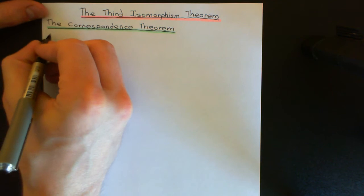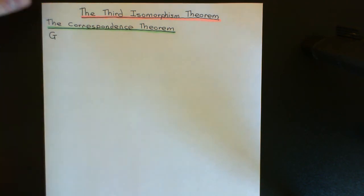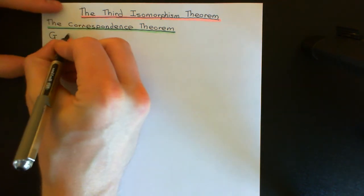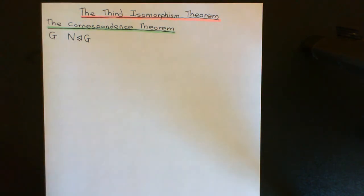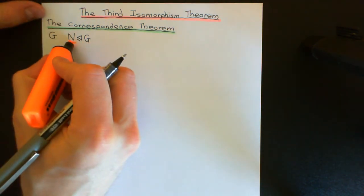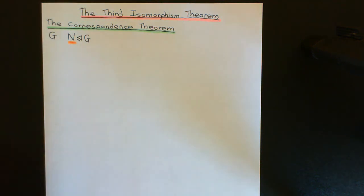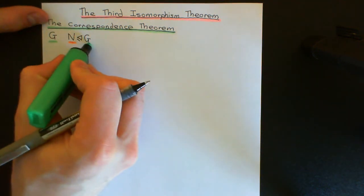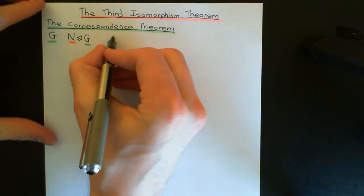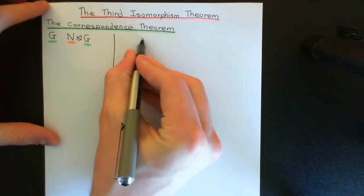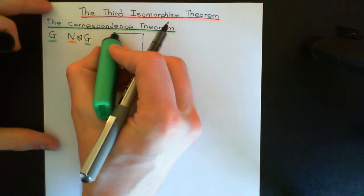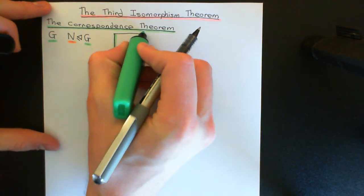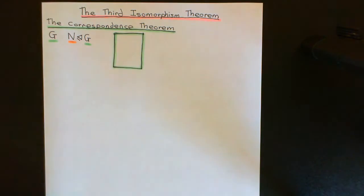Let's say we have some group, capital G — it doesn't need to be finite or abelian, it can be any group — and we've got some normal subgroup, capital N. I'll denote everything to do with N in orange, and everything to do with the entire group in green. Let me draw a picture: this box represents all the elements of our group G, coloured in green, with the normal subgroup outlined in orange.